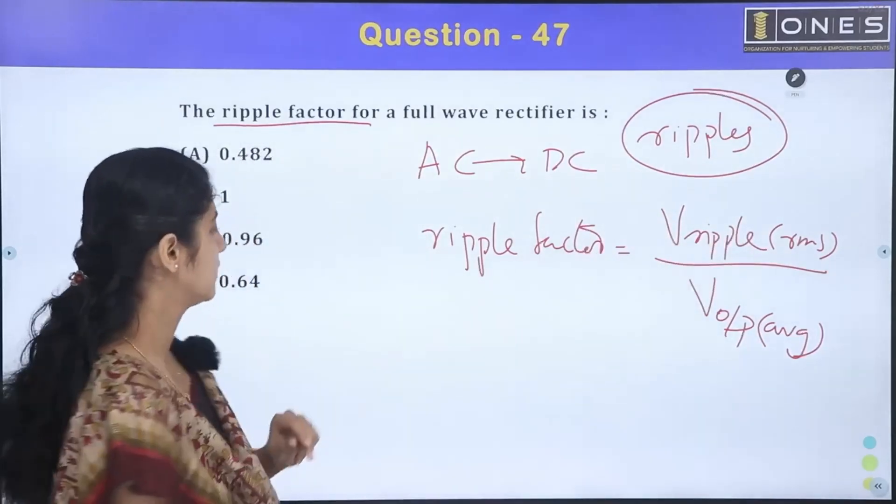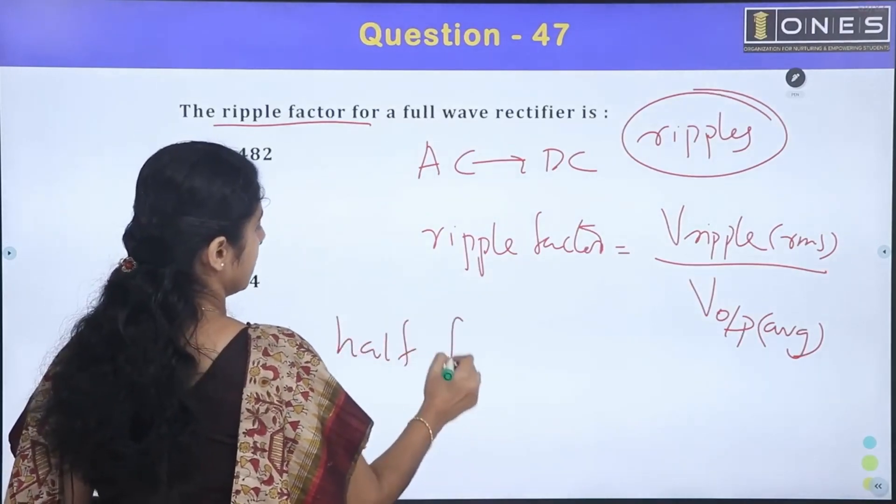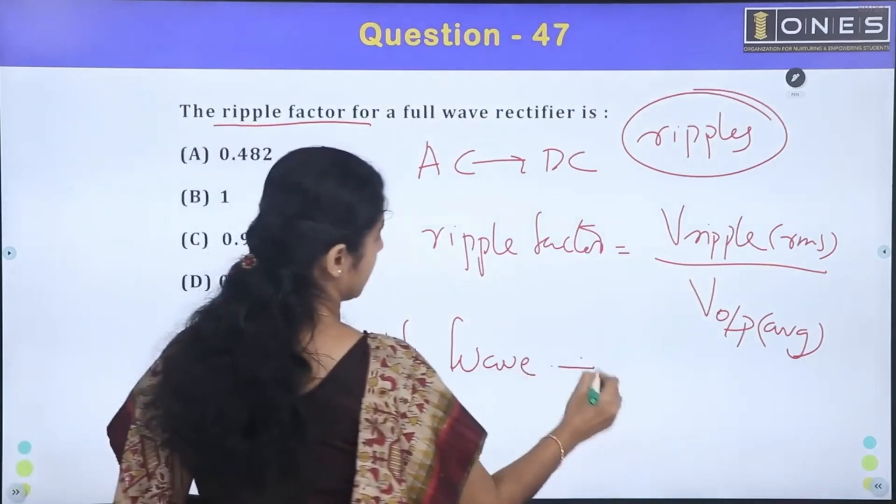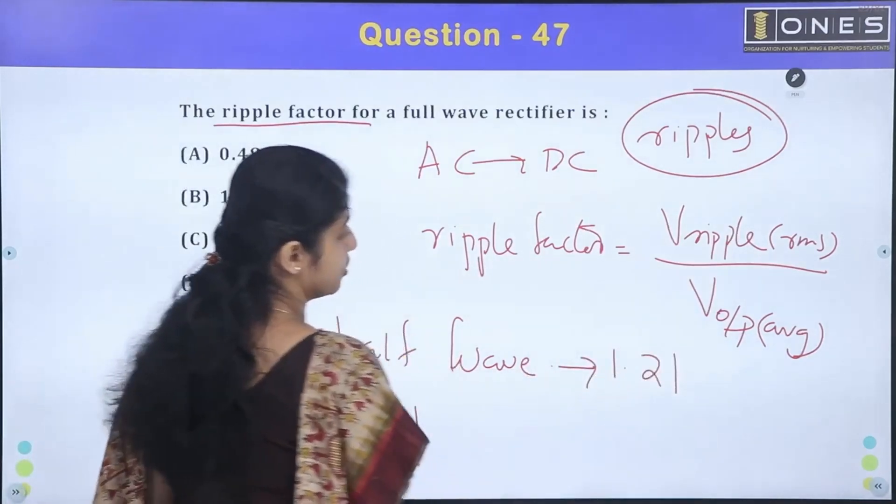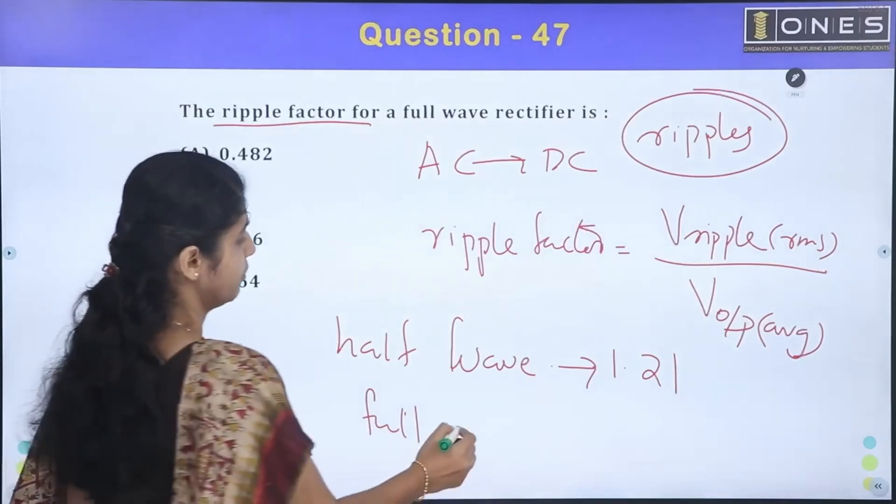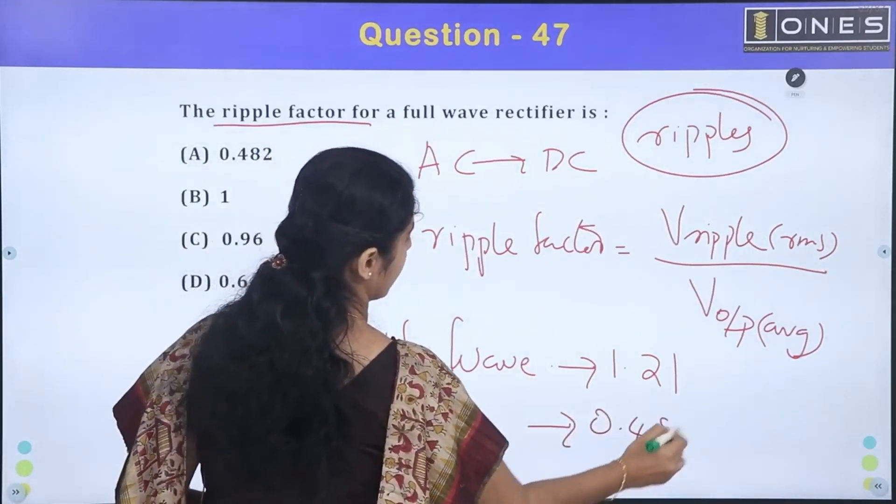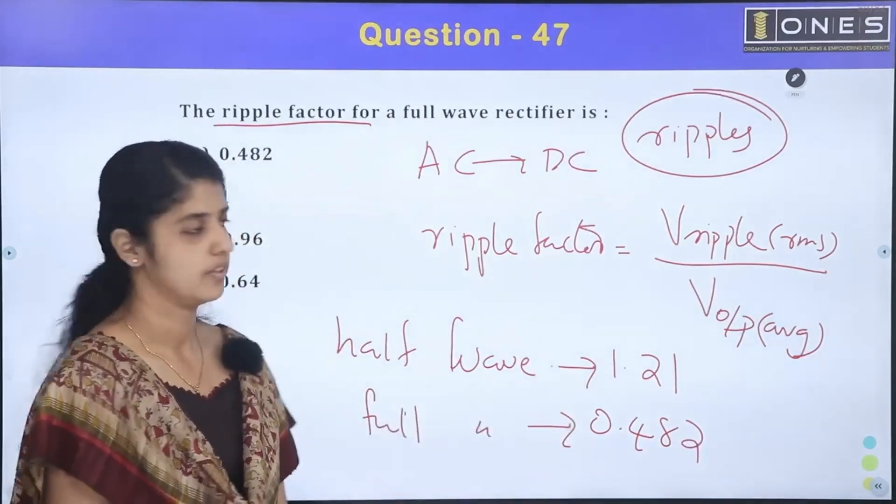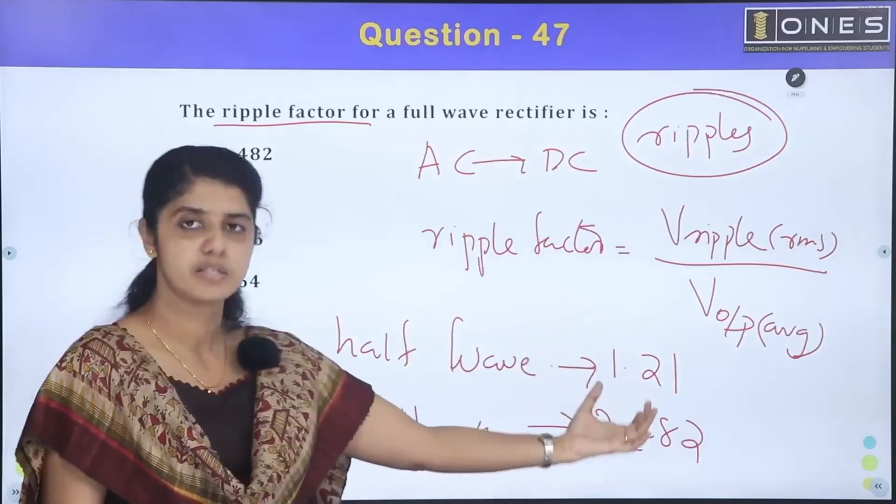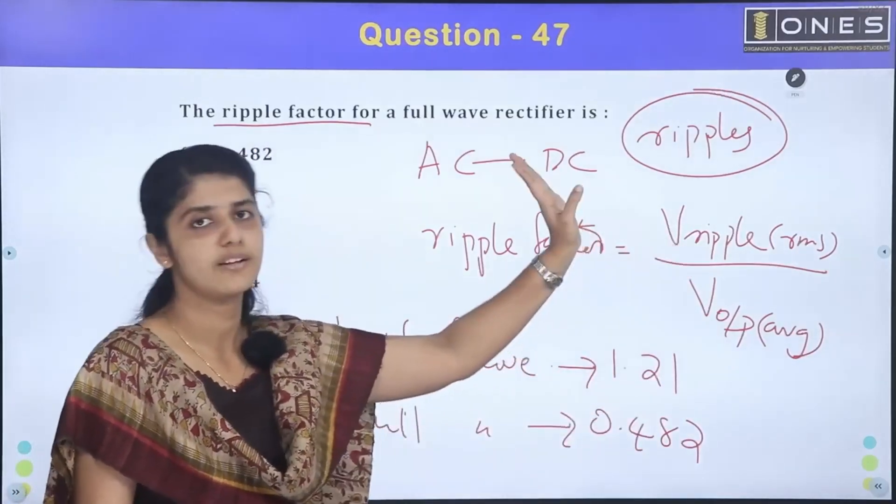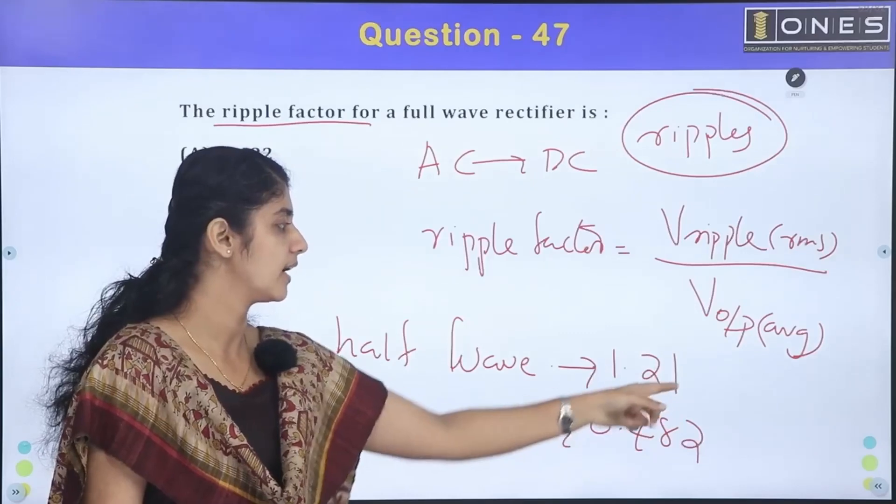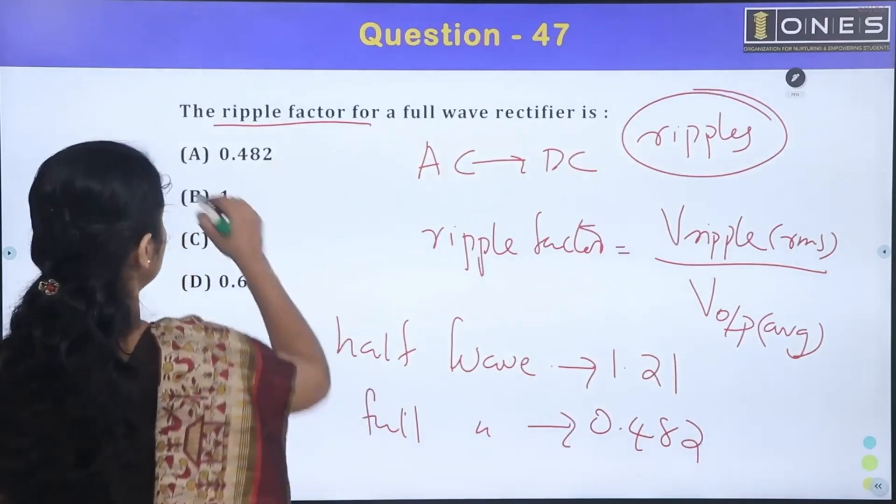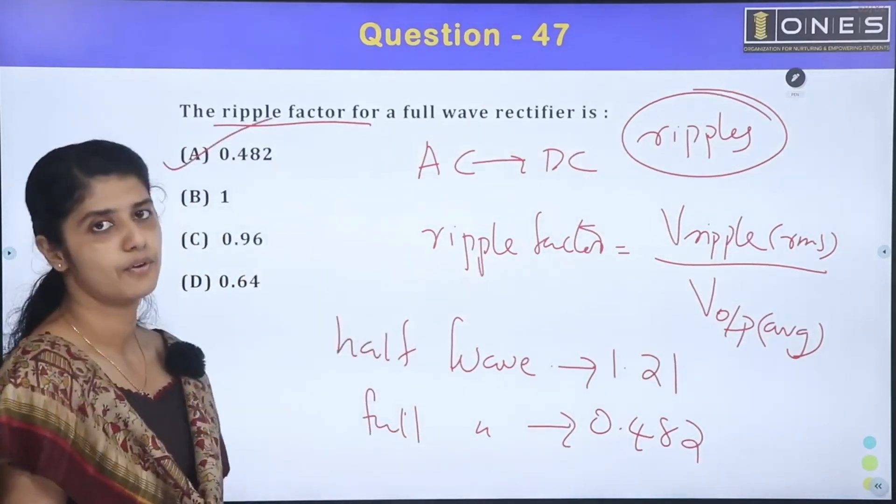What is this value? Half-wave rectifier and full-wave rectifier. This is 1.21. Full-wave rectifier is 0.482. The two values are in TSE. If you want to add ripples in half-wave rectifier, as you can add ripple, then you can add ripple. That is 1.21. The full-wave rectifier is 0.482. The answer is 0.482.